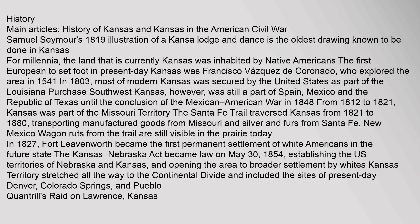The Kansas-Nebraska Act established the U.S. territories of Nebraska and Kansas, opening the area to broader settlement by whites. Kansas Territory stretched all the way to the Continental Divide and included the sites of present-day Denver, Colorado Springs, and Pueblo. Missouri and Arkansas sent settlers into Kansas along its eastern border, attempting to sway votes in favor of slavery. Abolitionists from Massachusetts and other Free Staters attempted to stop the spread of slavery, directly presaging the American Civil War. These forces collided in skirmishes that earned the territory the name Bleeding Kansas.